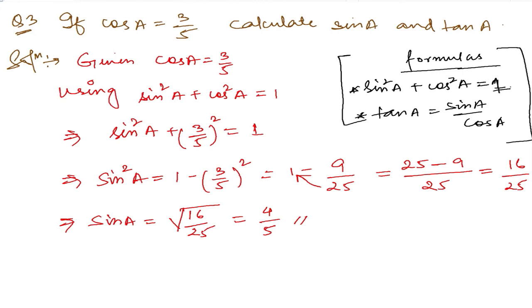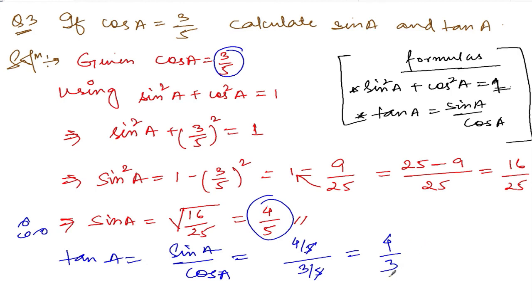Using the formula tan a = sin a/cos a. Sin a is 4/5, cos a is 3/5. So tan a = (4/5) ÷ (3/5). The 5s cancel, giving 4/3. Therefore tan a = 4/3.